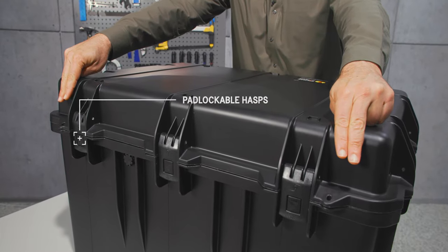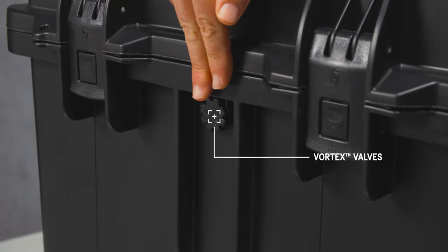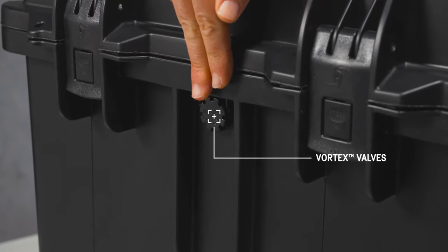Two lock hasps allow you to secure the contents of the case. The vortex valve balances the air pressure inside the case, preventing vacuum lock.